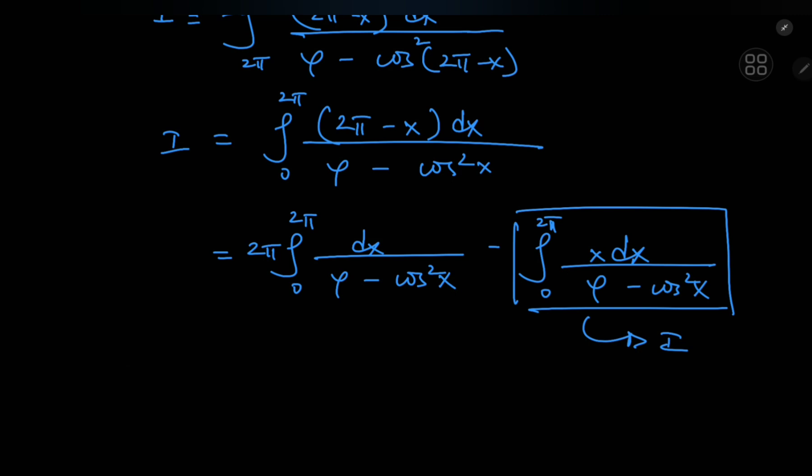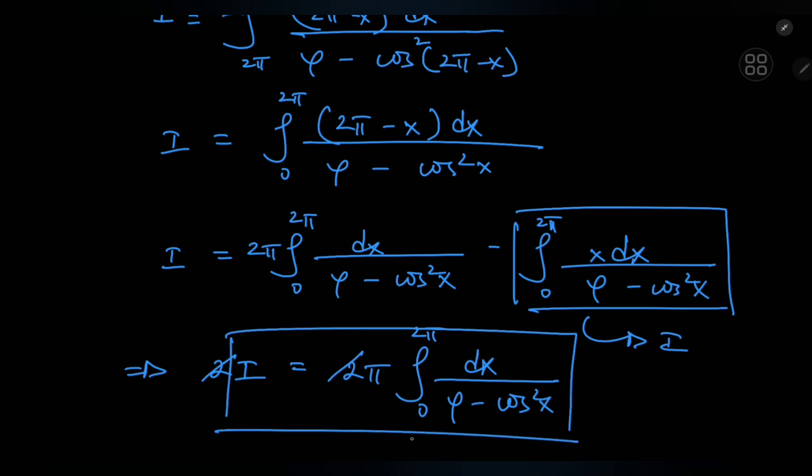So we have negative i here and i on the left hand side as well. So this implies that we have 2i equal to 2π times the integral from 0 to 2π of dx divided by φ minus the squared cosine of x, and the 2's cancel out pretty nicely. So we're now interested in this structure that is the integral from 0 to 2π of dx by φ minus cosine square x.